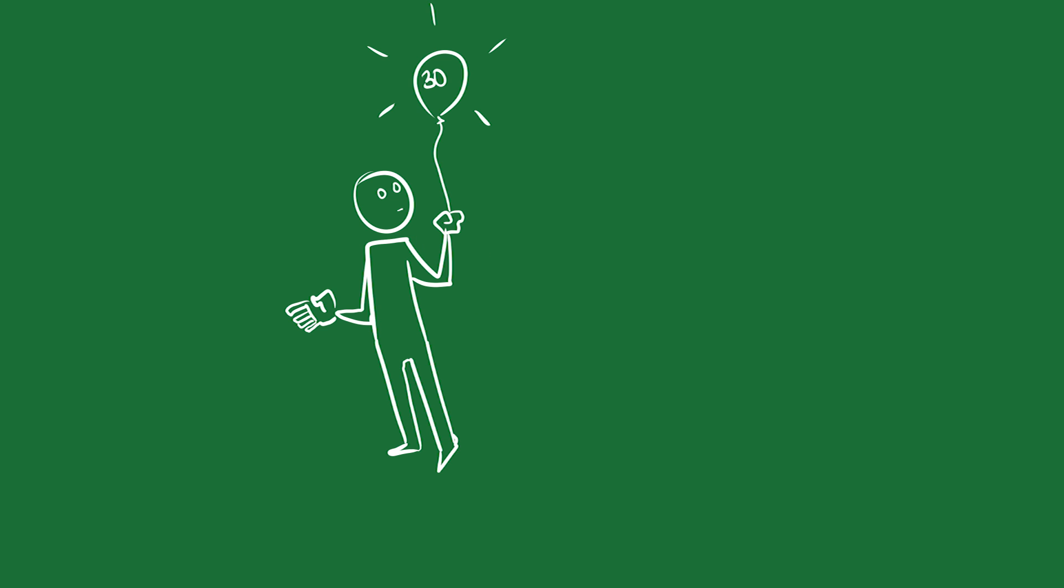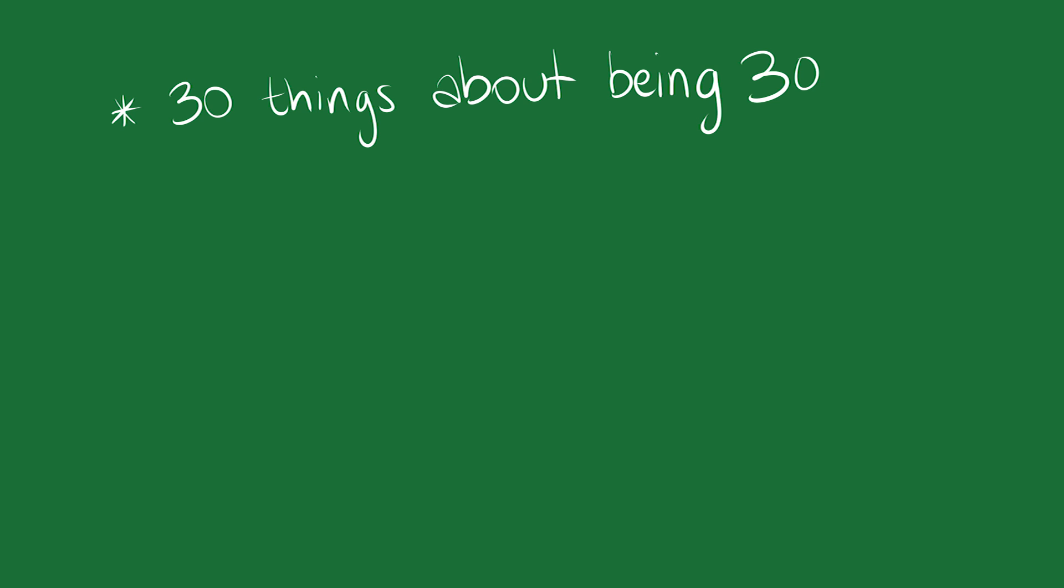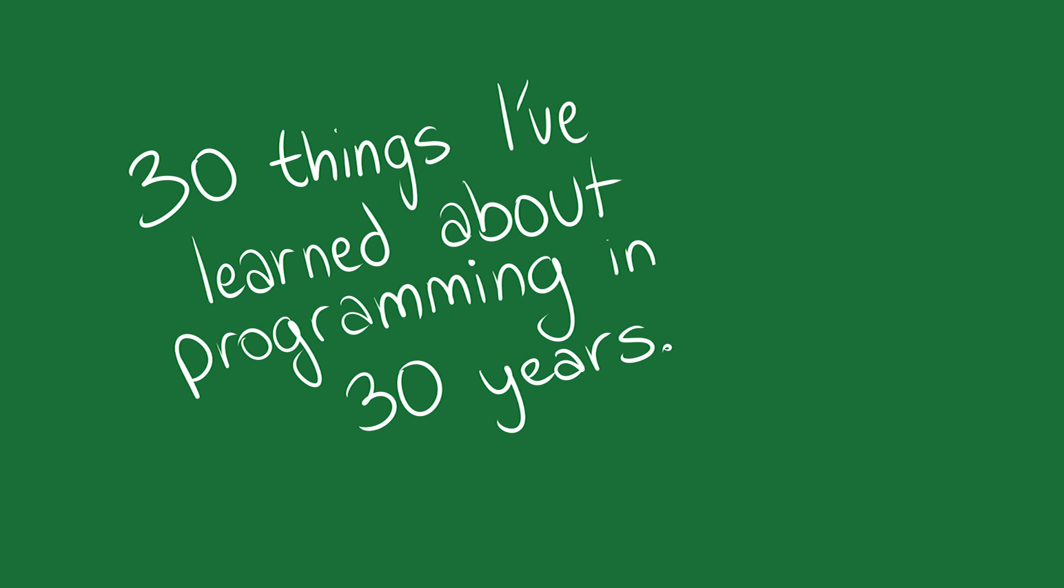I just made the terrible mistake of turning 30. Apparently, one of the things that 30-year-olds do on YouTube is make lists of 30 things. 30 is a lot of things to put in a list. I tried to make a list of 30 things about being 30, but I got like four things in before I realized that I just don't have that many things. So instead, I thought I'd make a list of 30 things I've learned about programming. Let's begin.